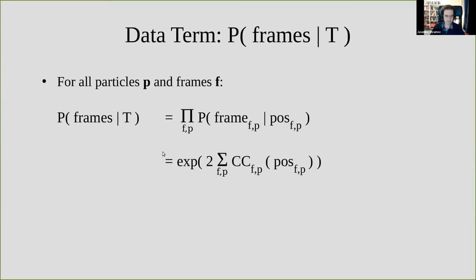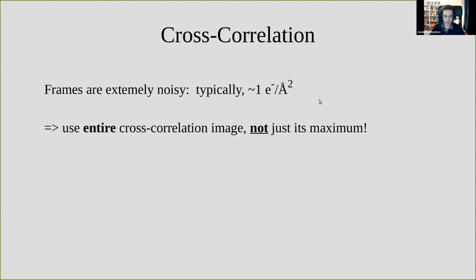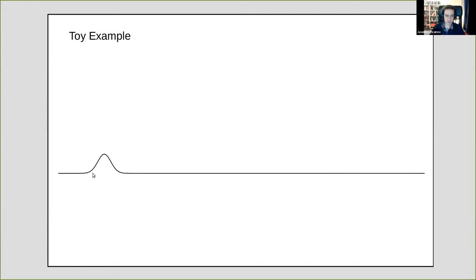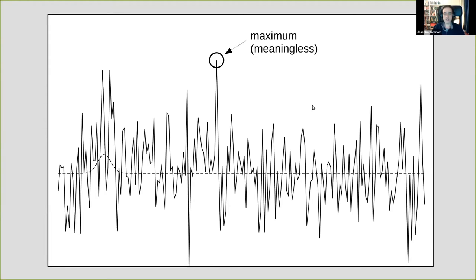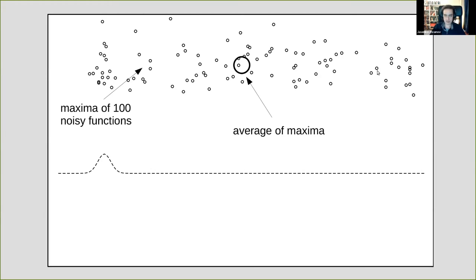We also want to look at multiple particles in multiple frames. Since the noise in those is uncorrelated, the probability of seeing all frames given the hypothetical trajectories is a product of all individual Gaussian probabilities — again an exponential over a bigger sum: twice the sum of all cross-correlation values at the positions of all particles in all frames. A very important point is that we need to work with the actual cross-correlation images; we never reduce them to their maxima, because those are meaningless at this noise level. In a toy 1D example with realistic noise added, picking the maximum is nearly meaningless. Doing this 100 times shows the maxima form essentially a uniform distribution with only a slight elevation above the true peak.